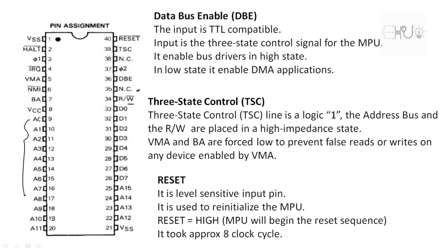Pin 40 is the reset pin. It is a level-sensitive input pin used to reinitialize the microprocessor unit — that is, to restart the microprocessor when it gets stuck due to some interruption. When reset is high, the microprocessor begins the restart sequence, which takes approximately eight clock cycles.